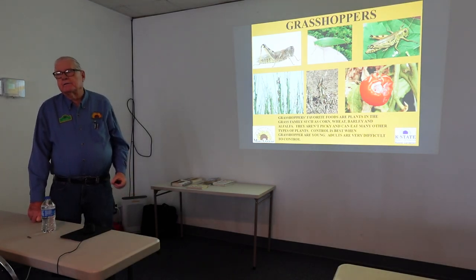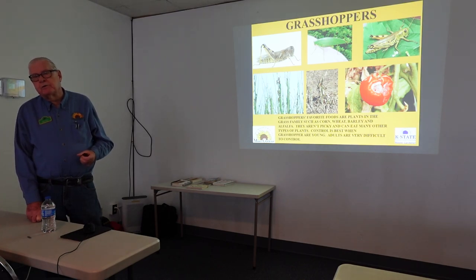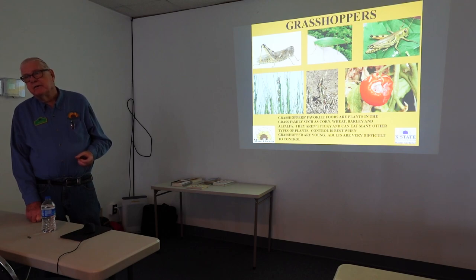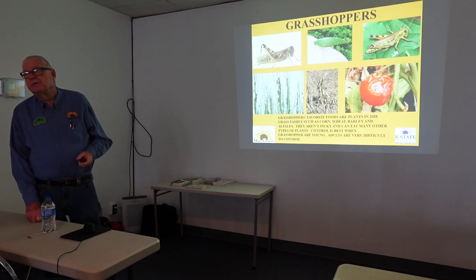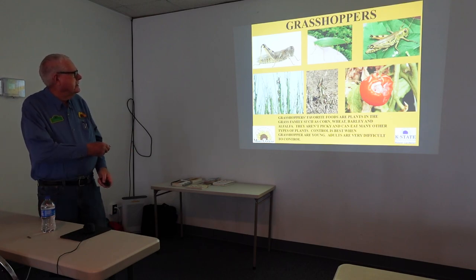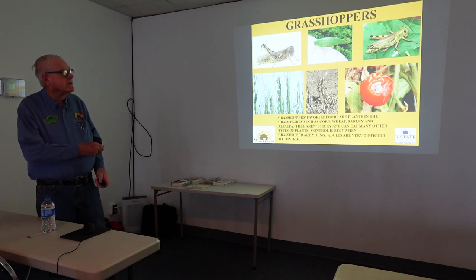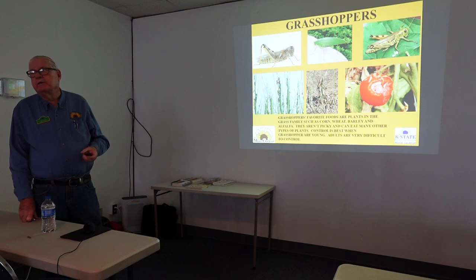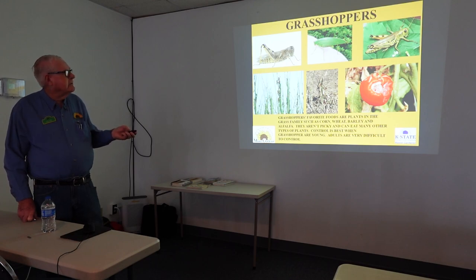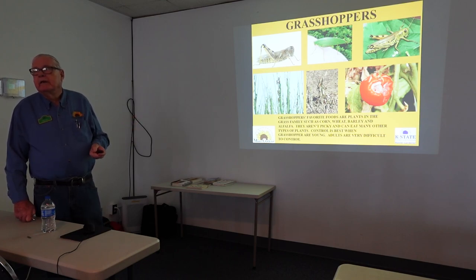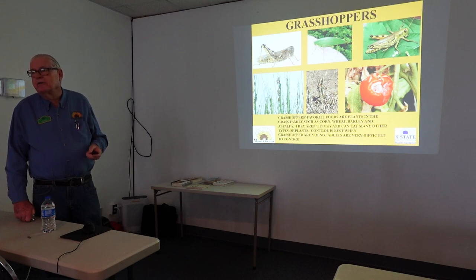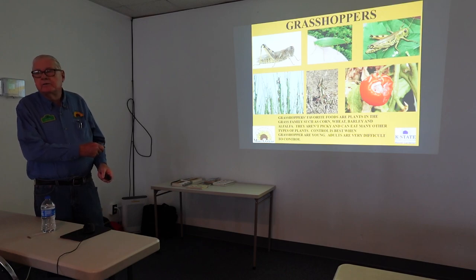Grasshoppers — this is a tough one. The best stage to try and control the grasshopper is in the nymph stage. If they get to the adult, there are very few control measures you can do other than physically stepping on them, which is almost impossible. One of their favorite things is corn, wheat, barley, and alfalfa. Back in the 1930s there was a big influx of locusts or grasshoppers, and they ate all of the crops in Kansas. People were actually in famine and starving because the grasshoppers had done that type of damage.